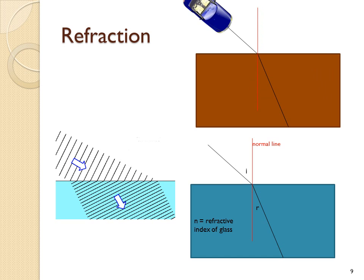An analogy to explain it would be a car driving from tarmac into mud. As the car drives towards the mud, eventually one wheel gets to the mud before the other wheel. This wheel will travel slower and this wheel faster, so the car will change direction. When the car exits the mud, one wheel reaches tarmac first, travels faster, and the car will move back to its original path.